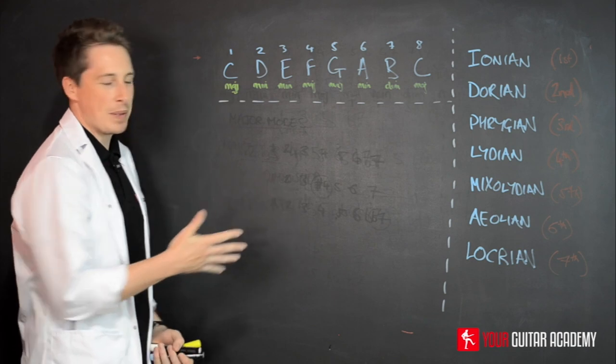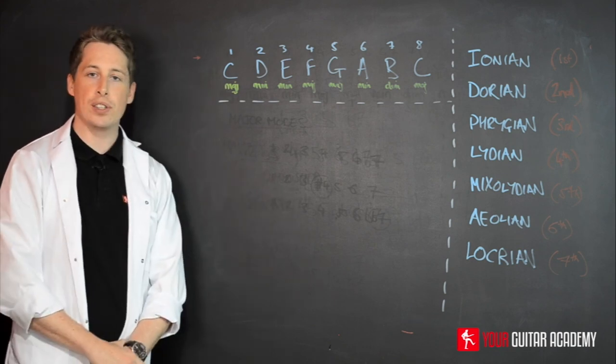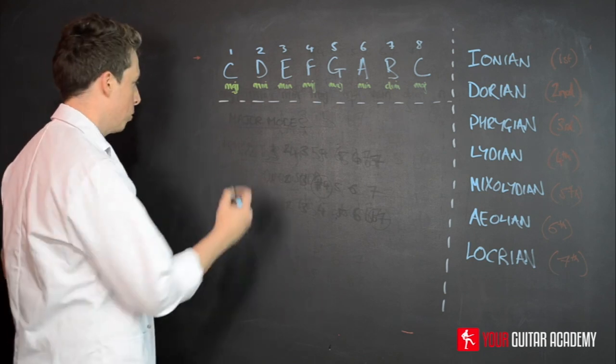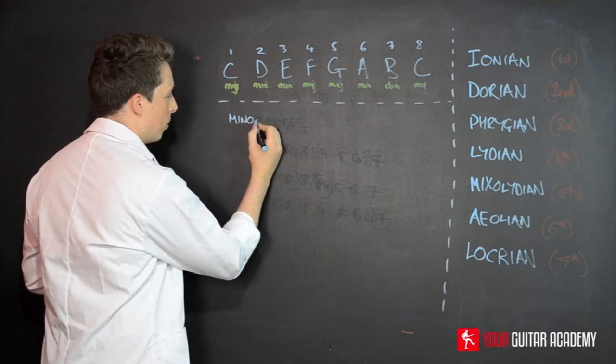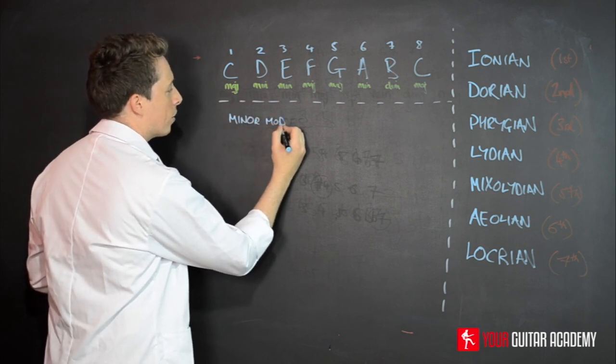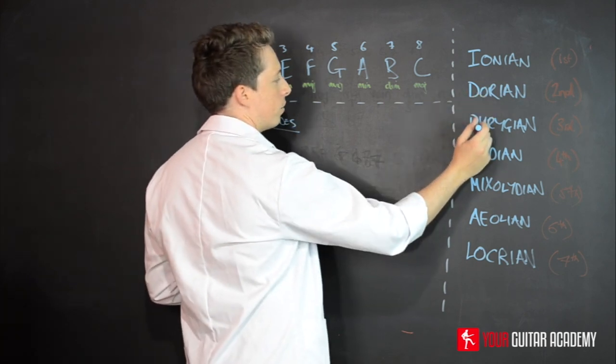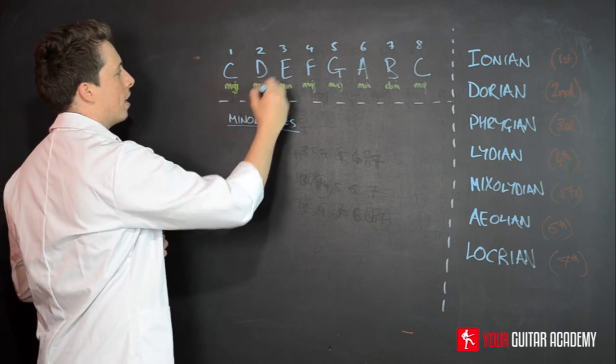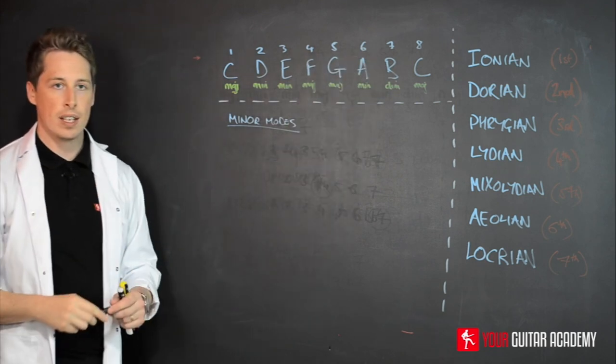So what we're going to be doing today is grouping the minor modes and then kind of singling out this diminished mode. Last time we looked at the major modes as we grouped them together. Now, when it comes to minor modes, we're kind of looking at the three modes: Dorian, Phrygian and Aeolian. The Dorian is on the second degree, the Phrygian is on the third and the Aeolian is on the sixth degree.